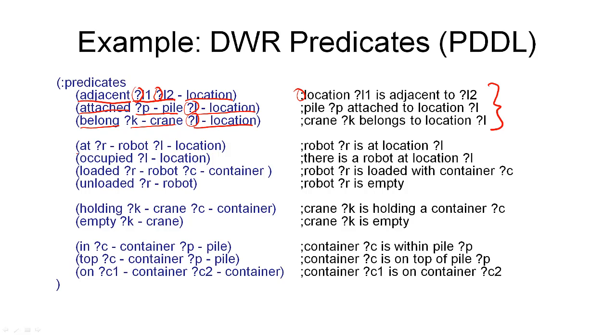For example, the at relation tells us where a robot is currently. It tells us at which location this robot is currently located. Then we have an occupied location, which is a unary relation. It takes only one argument and tells us whether a given location is occupied by a robot at that location.